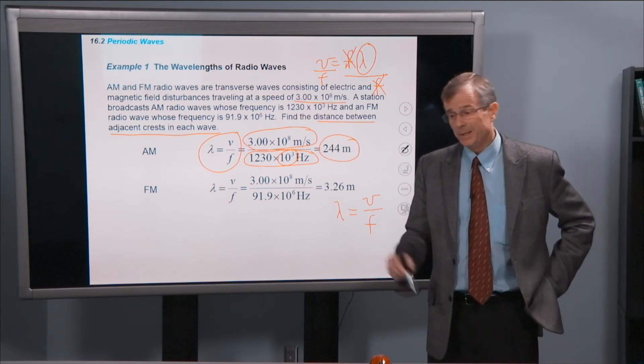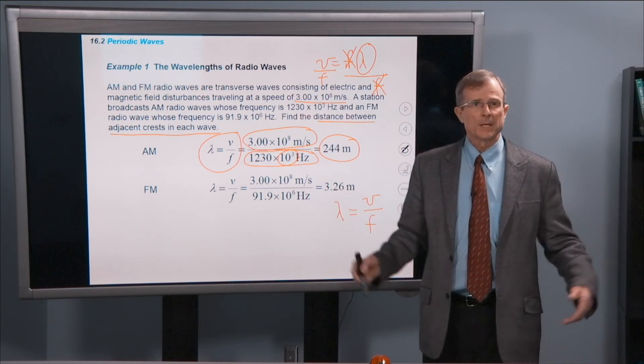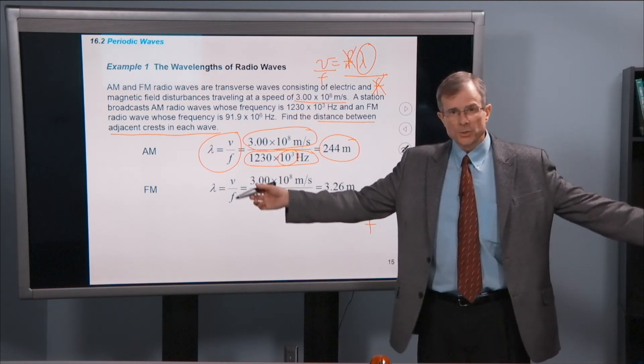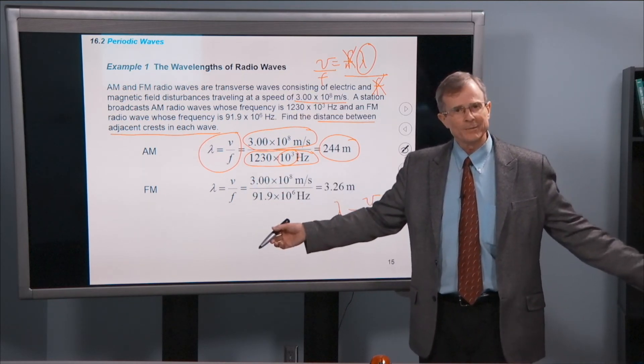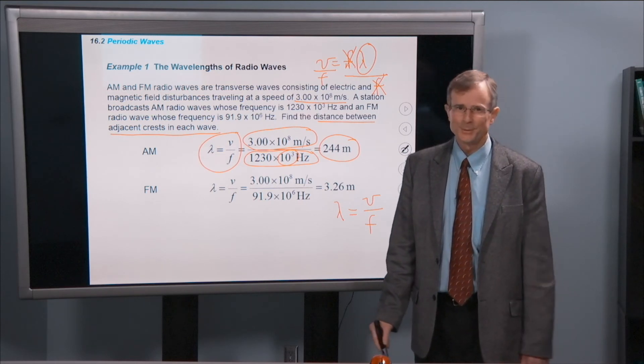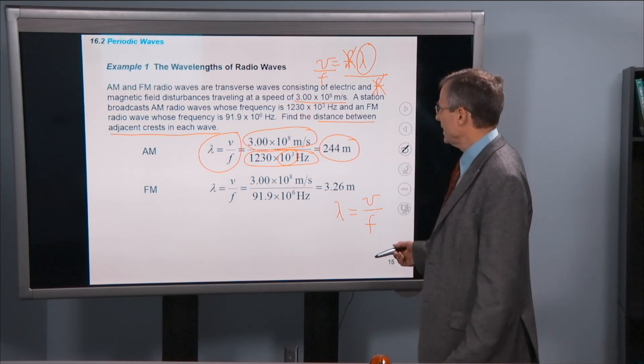How far is that? Well, the football field is 100 yards. That's about 100 meters. So we're talking about two and a half football fields is the wavelength of that AM station. Pretty neat, I think. What about FM?